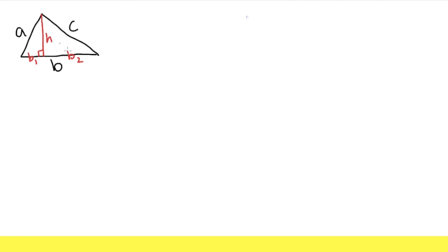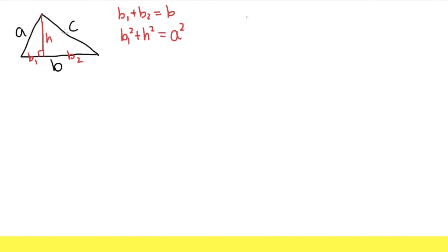Let me write down the things we can see from this picture. For example, we know B1 plus B2 has to equal B. And if we look at this right triangle, we can use the Pythagorean theorem: B1² + H² = A². Similarly, for the other right triangle: B2² + H² = C².